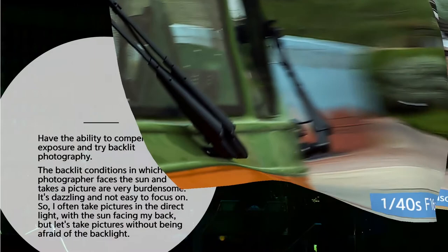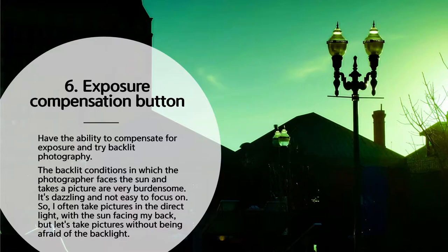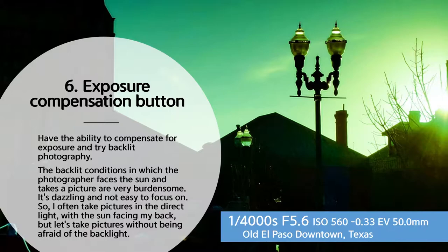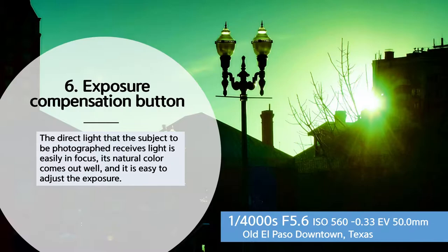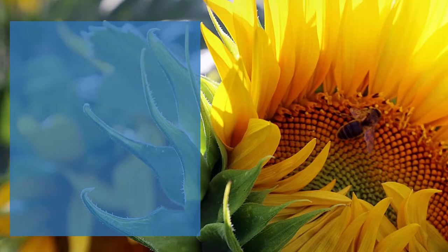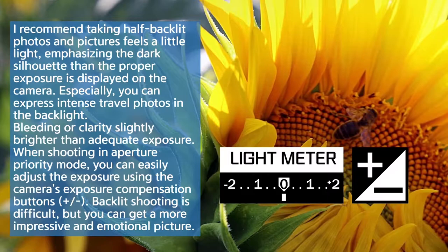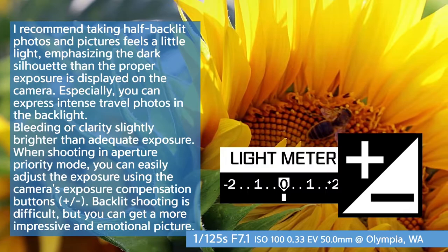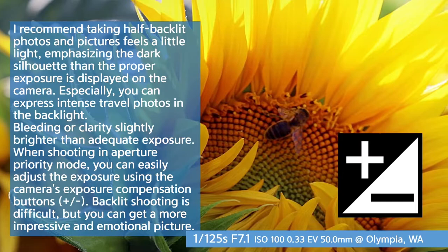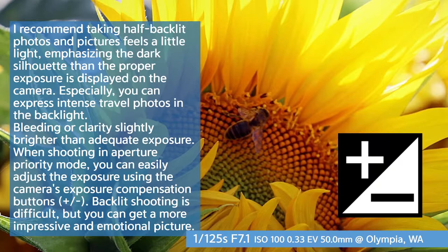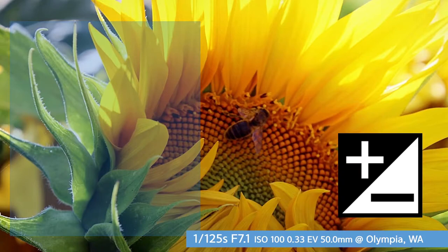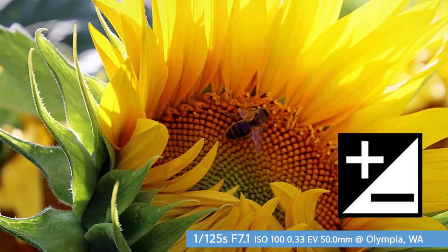Topic 6: Exposure Compensation — have the ability to compensate for exposure and try backlit photography. Backlit conditions where the photographer faces the sun are very burdensome. Direct light means the subject receives light easily and is in focus, its natural color comes out well, and it is easy to adjust the exposure. I recommend taking half-backlit photos; when the picture feels a little light and emphasizes the dark silhouette, the proper exposure is displayed on the camera. You can express intense travel photos in backlight — slightly brighter than adequate exposure. When shooting in aperture priority mode, you can easily adjust the exposure using the camera's exposure compensation buttons. Backlit shooting is difficult, but you can get a more impressive and emotional picture.